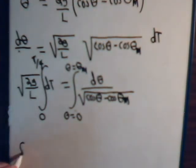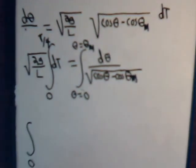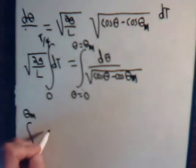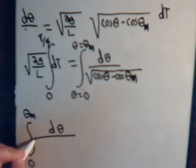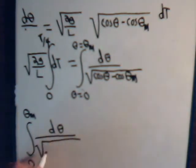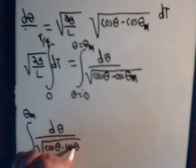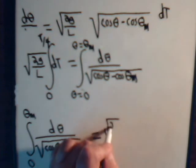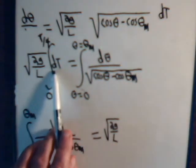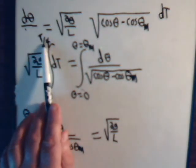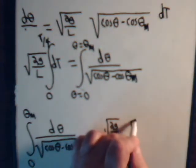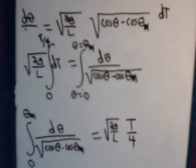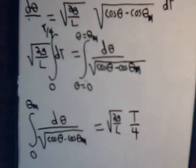So we have this integral going from zero to theta maximum of d theta divided by the square root of cosine of theta minus the cosine of theta maximum, and that will equal the square root of 2g over l times t evaluated from zero to T over four, which is just capital T over four. So this finally is our final equation that we have to solve for our pendulum problem.